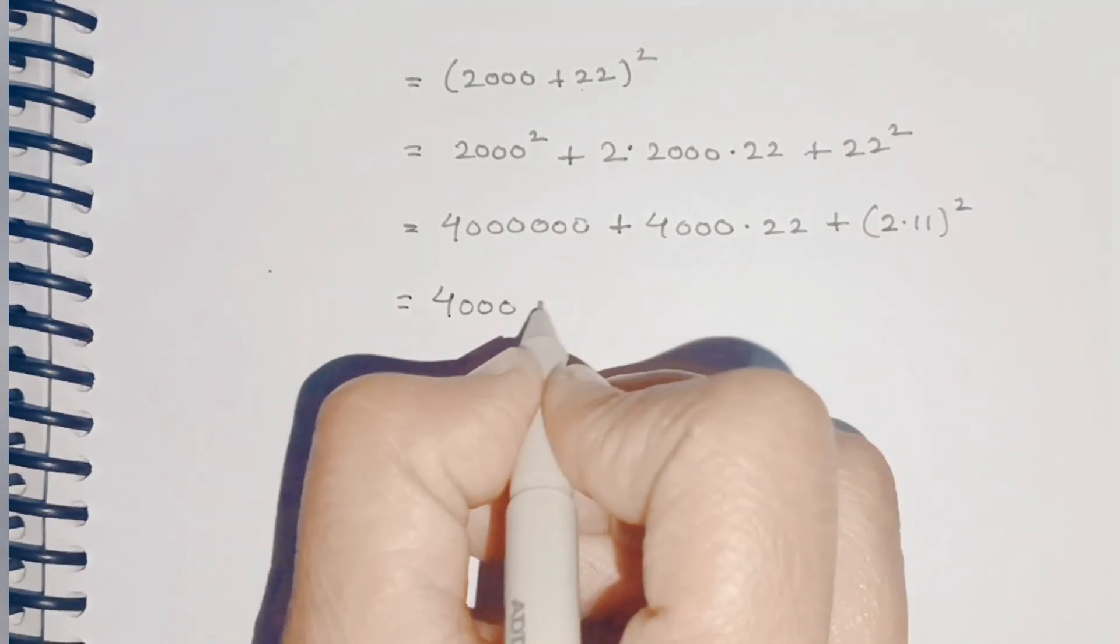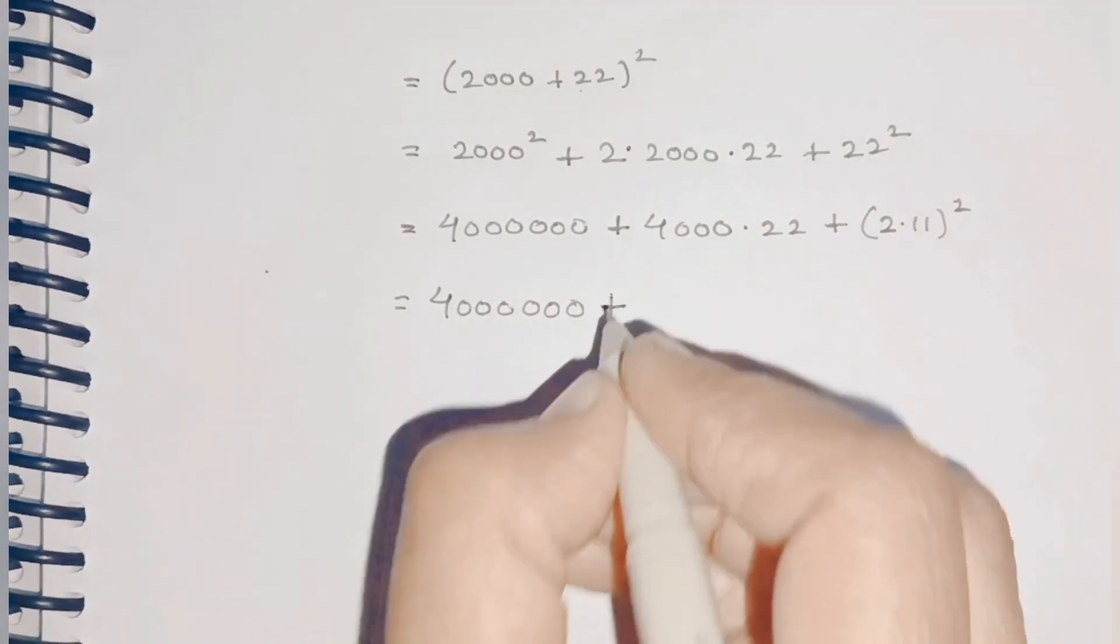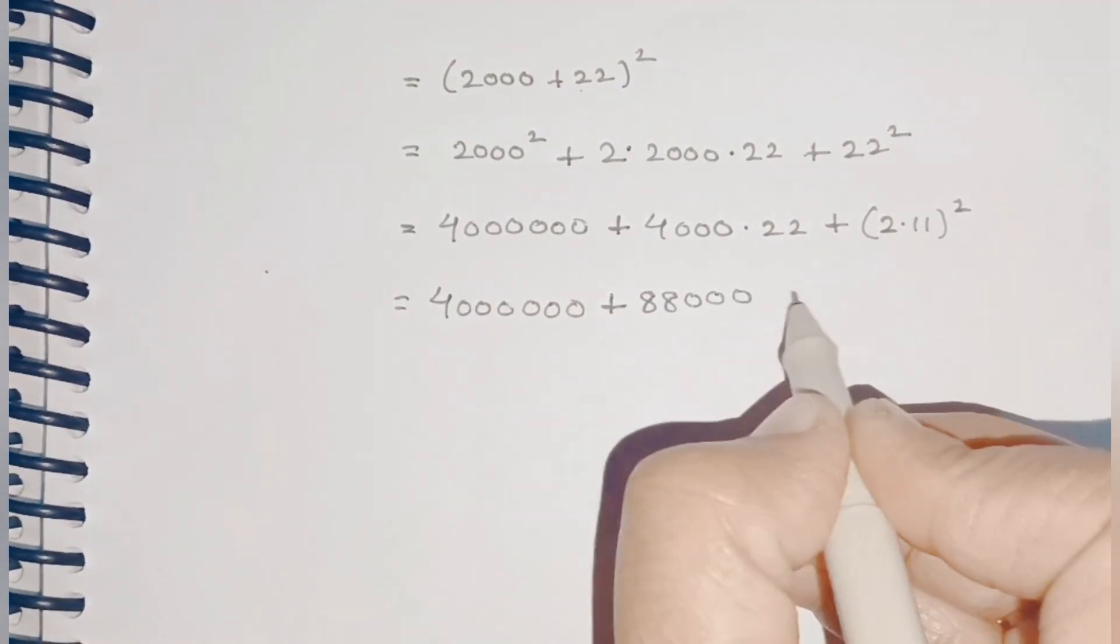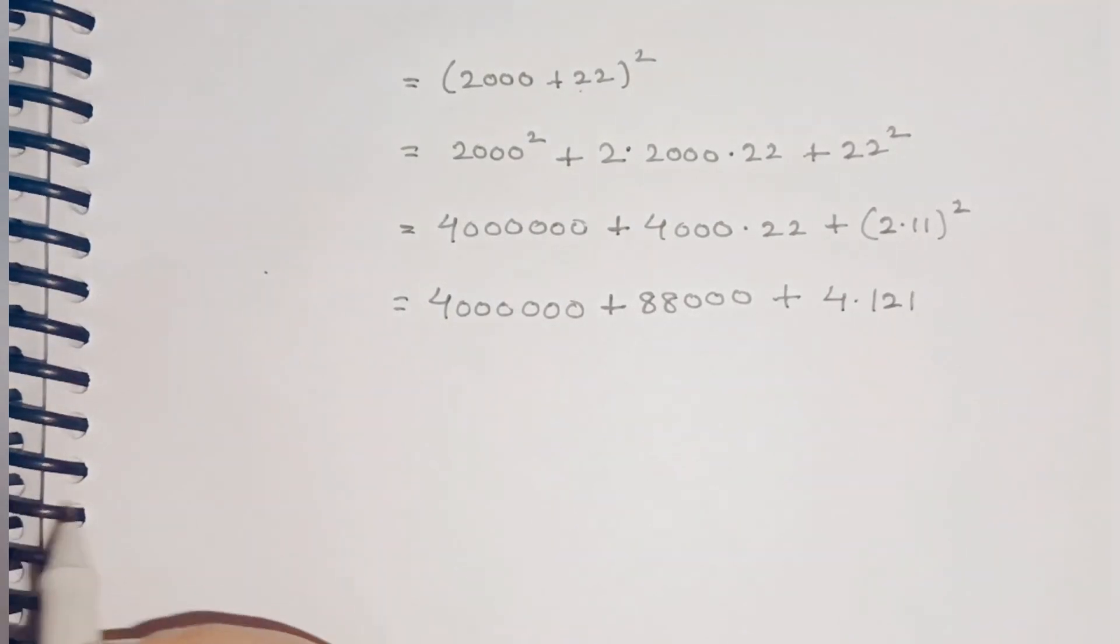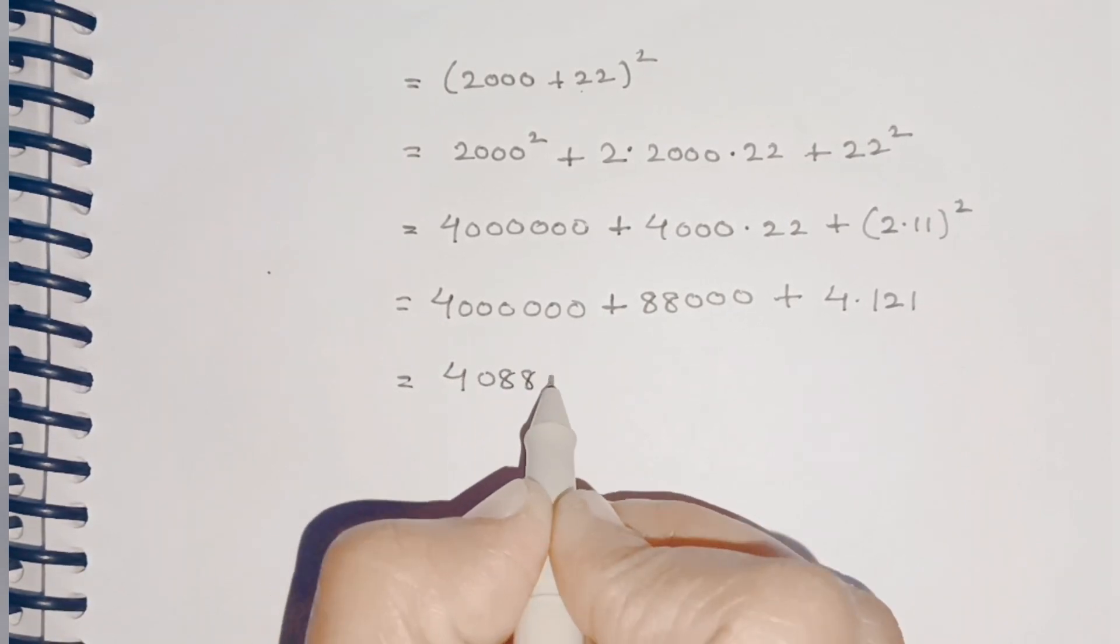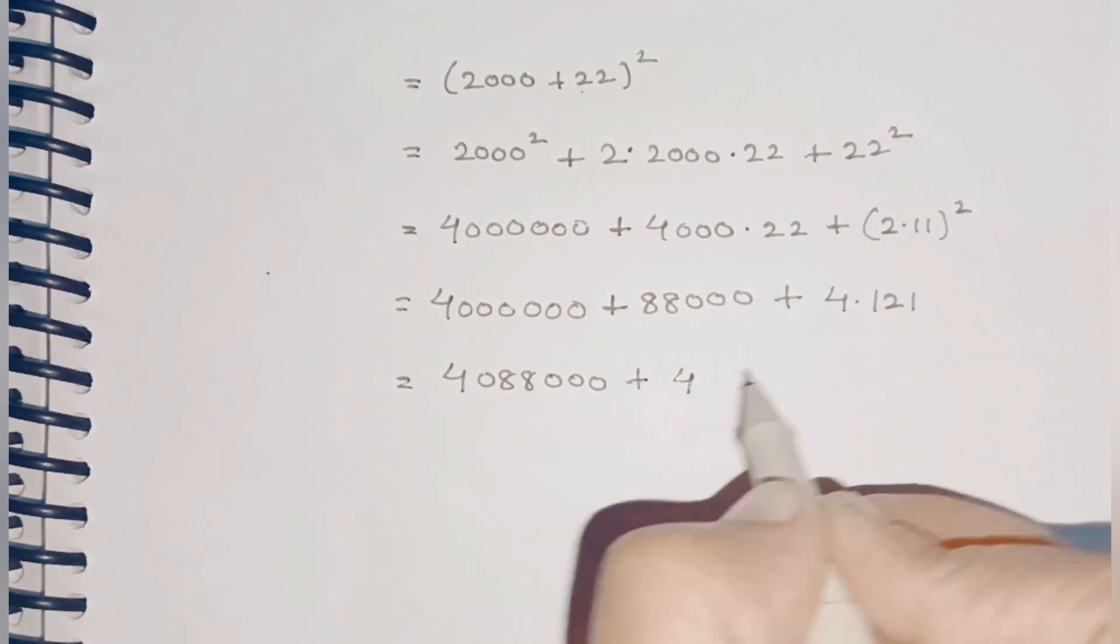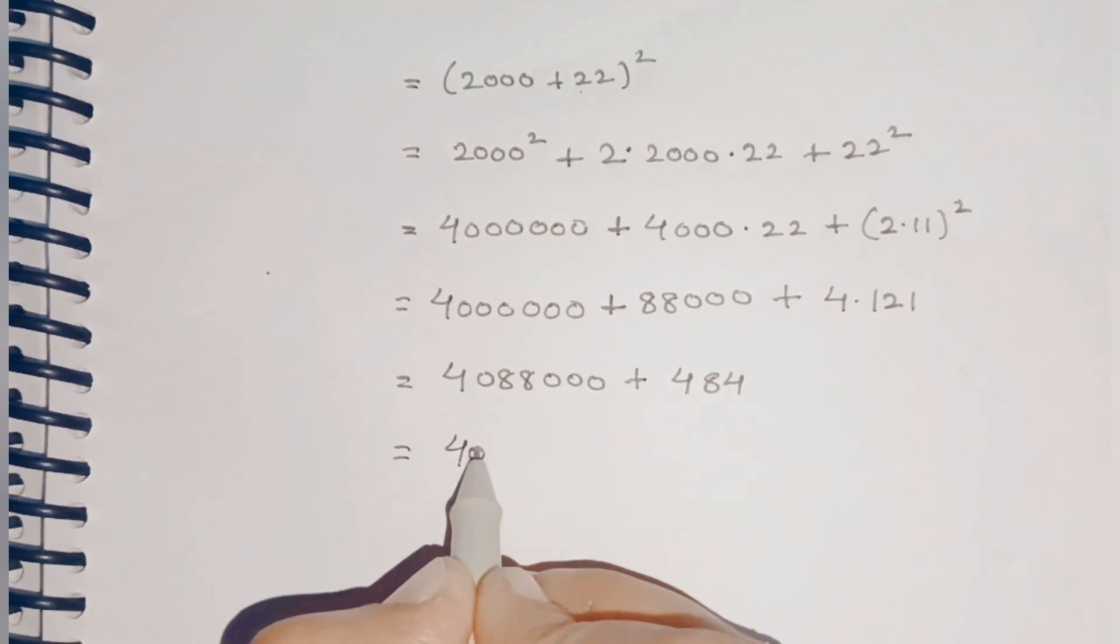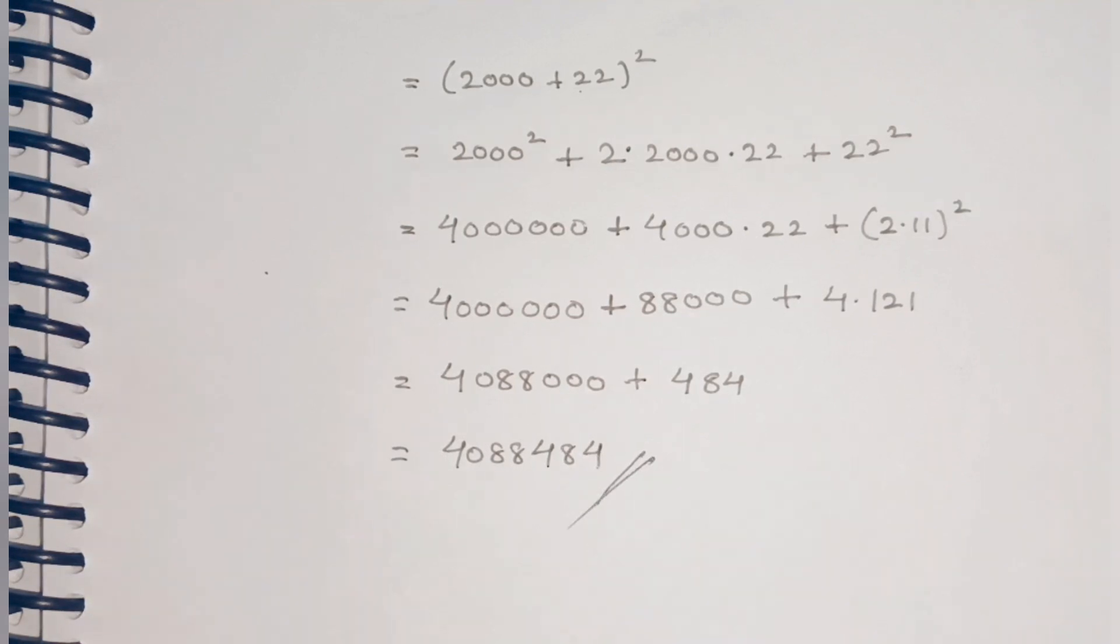The first term is 4,000,000. Plus 4000 × 22 = 88,000. Plus 2² × 11² = 4 × 121 = 484. So we have 4,000,000 + 88,000 + 484 = 4,088,484.